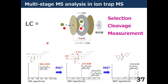In the case of the ion trap type MS, the cycle of selection, cleavage, and measurement can be repeated multiple times. The molecule of 565 yields an MS spectrum for the first cleavage, and then the next fragment with mass 271 is selected, cleaved, and measured again. These are called MS-2 and MS-3 spectra, respectively. The MS spectra contain information about the substructure of the original molecule, so approaches to predict the original molecule based on MS spectra have been studied actively.